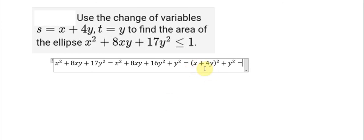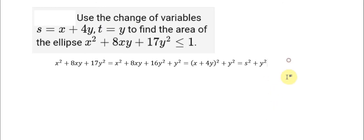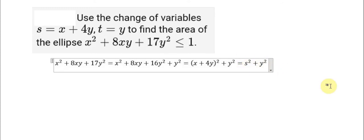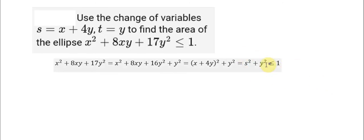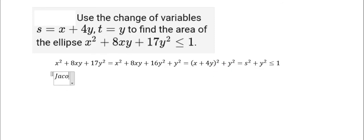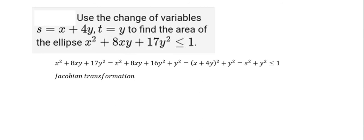So now s plus 4y is defined as h, and t is defined as y. We can see that this describes a circle. Now we need to find the area of this circle, and we apply the Jacobian transformation.